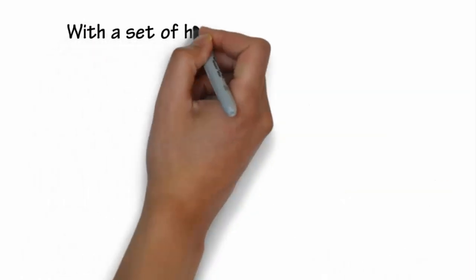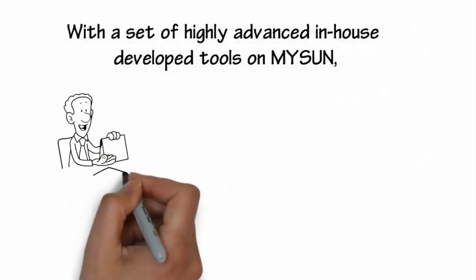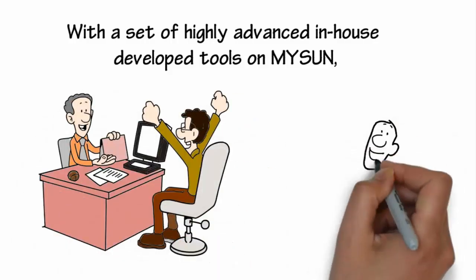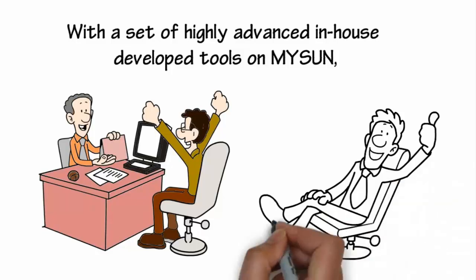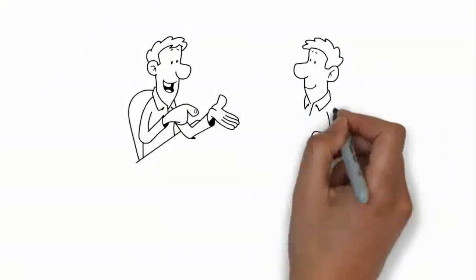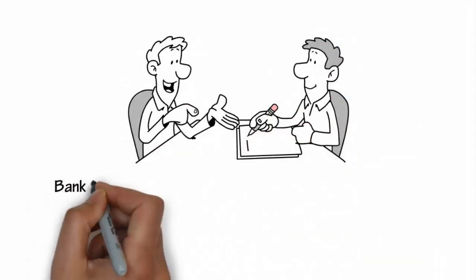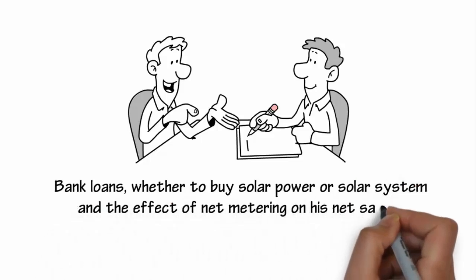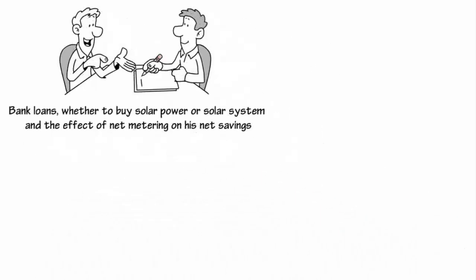With a set of highly advanced in-house developed tools on MySun, a consumer can not just estimate his solarization potential, but also size and design his system, simulating the real-life dynamics of his site. The consumer can also get a snapshot of all the possible financing information, such as bank loans, whether to buy solar power or a solar system, and the effect of net metering on his net savings.